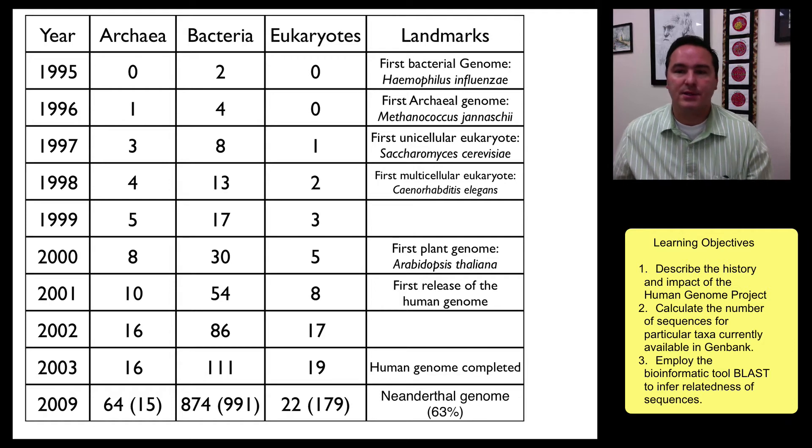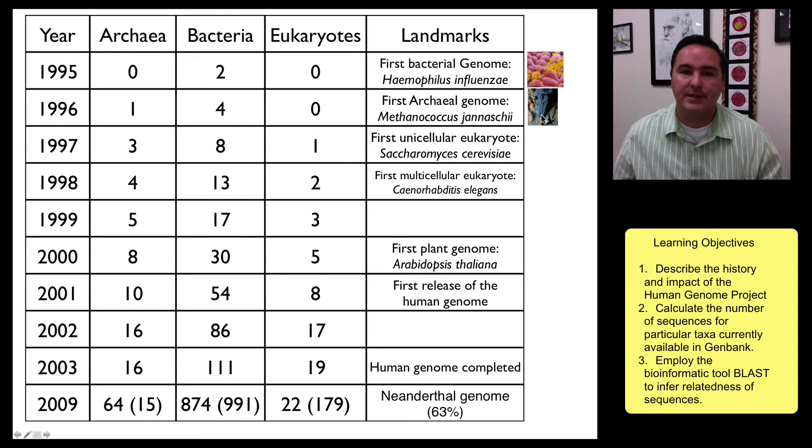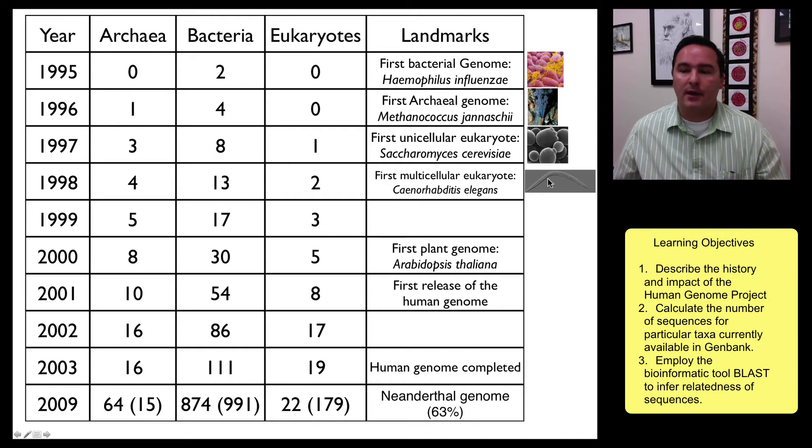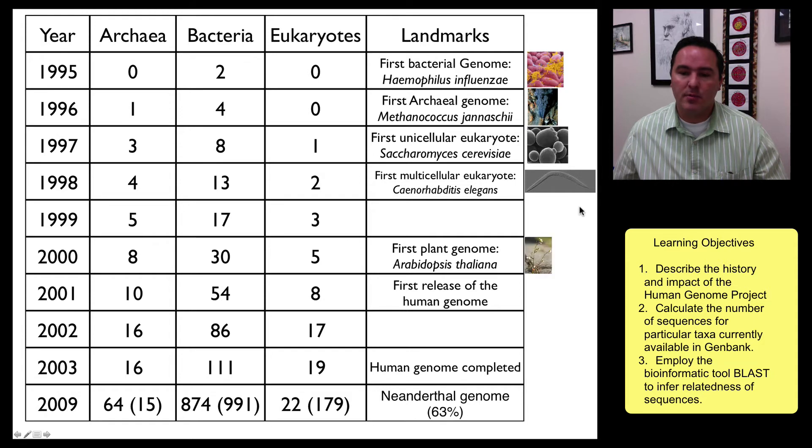If you look at some of the milestones through here, you can see that in 1995, the first bacterial genomes were sequenced, and then in 1994, you get the first archaeal genomes. In 97, the first eukaryote, Saccharomyces here, which is yeast. In 98, that worm, that's called C. elegans, it's a nematode worm. So Arabidopsis, the first plant.